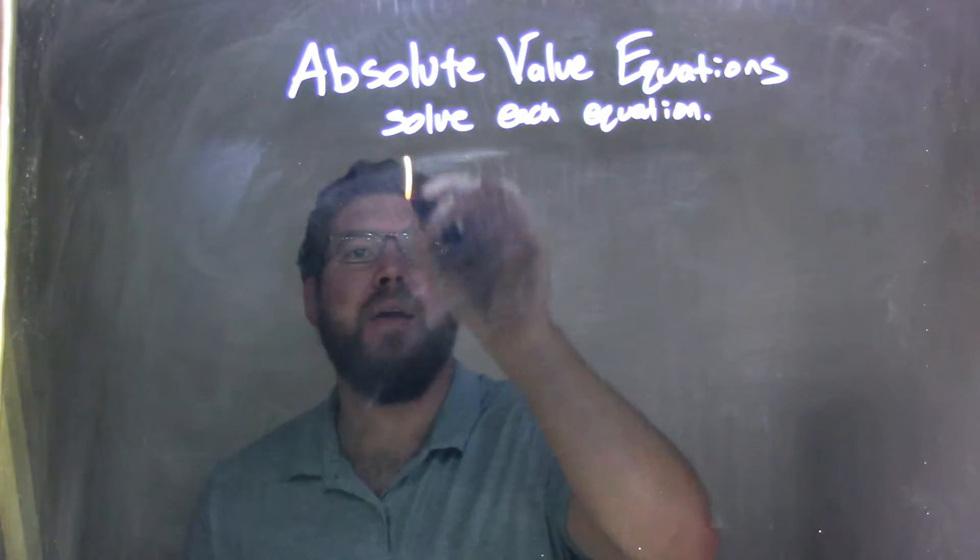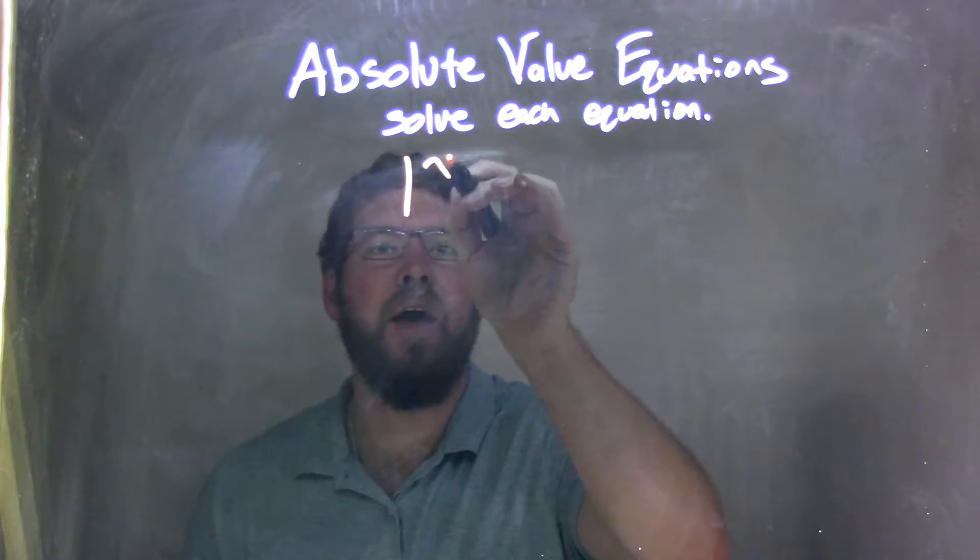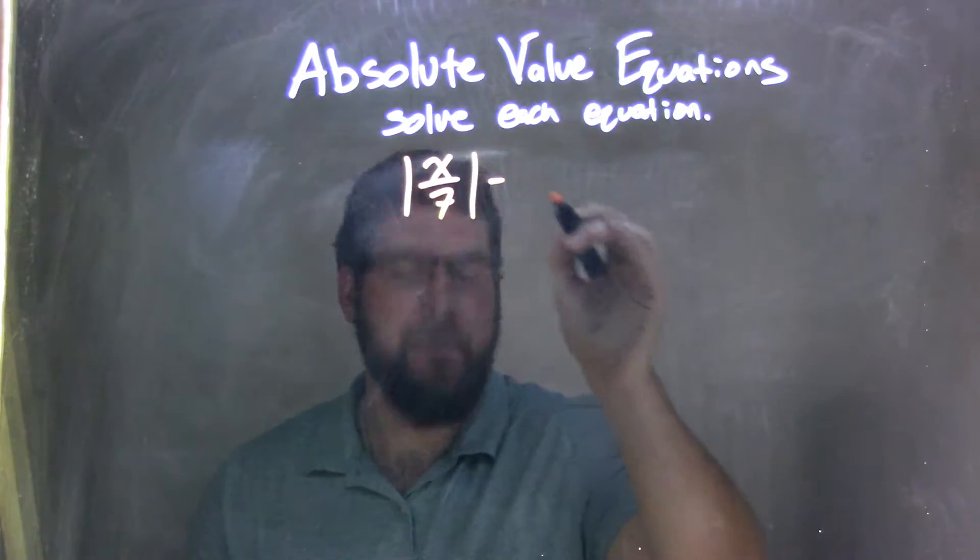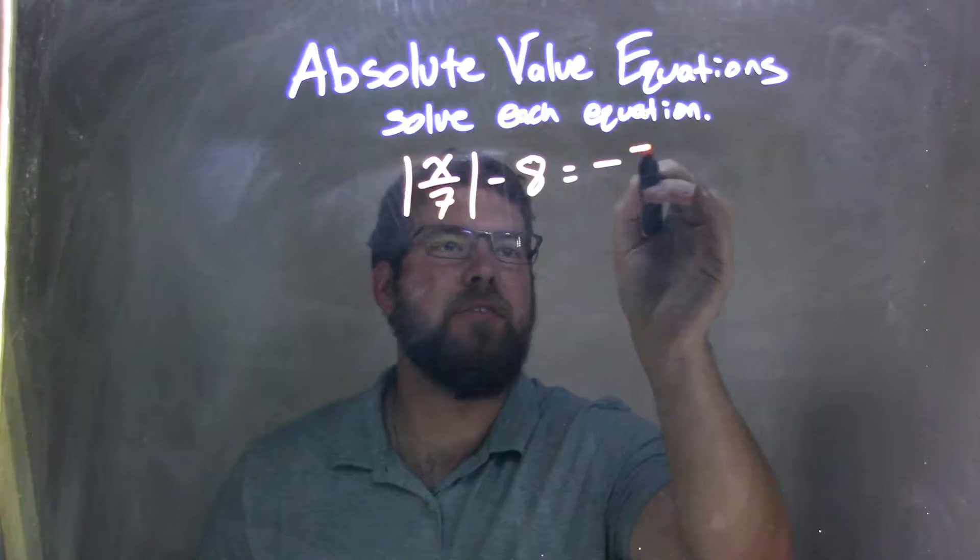So if I was given this equation, absolute value of x over 7 minus 8 equals negative 7.